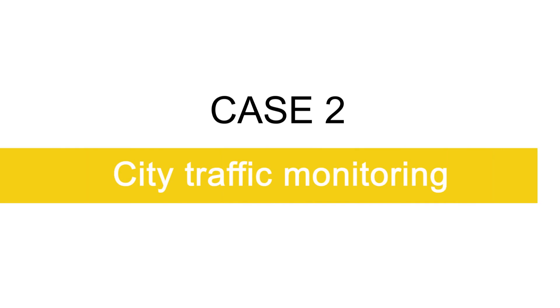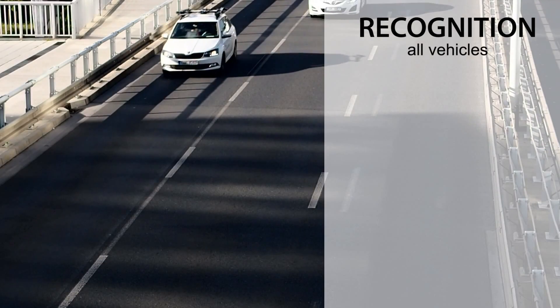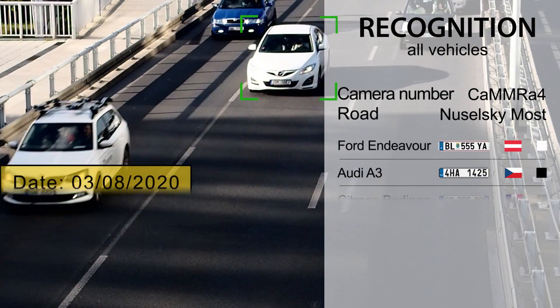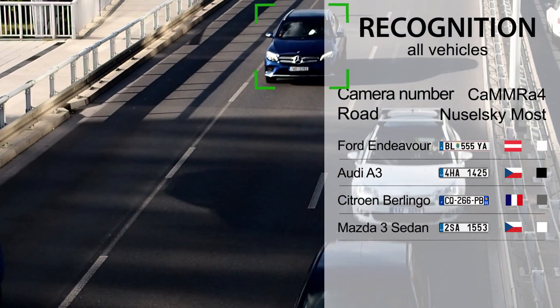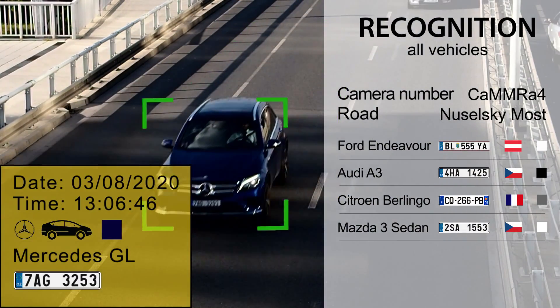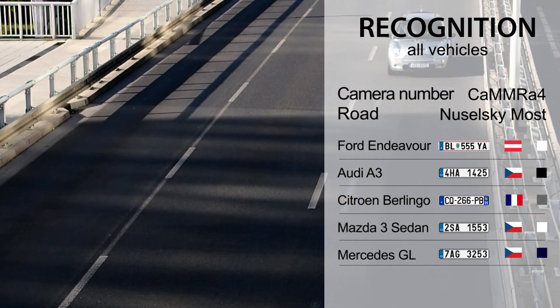Case 2: City Traffic Monitoring. Traffic Camera captures all vehicle parameters and sends recognized data to a central database. Users can check the following parameters.